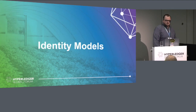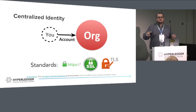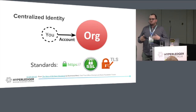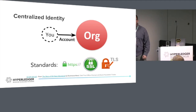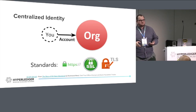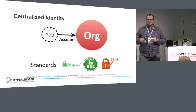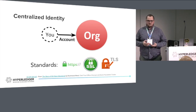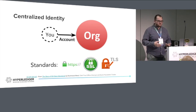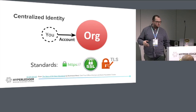Starting out, I want to cover the idea of identity models. Identity has been around for a very long time. One of the earliest national identity systems was created by Napoleon Bonaparte so he could track property ownership. National identity systems have been around for quite some time, but they were designed in a very centralized fashion because typically the only people using them were the government to conduct government services.